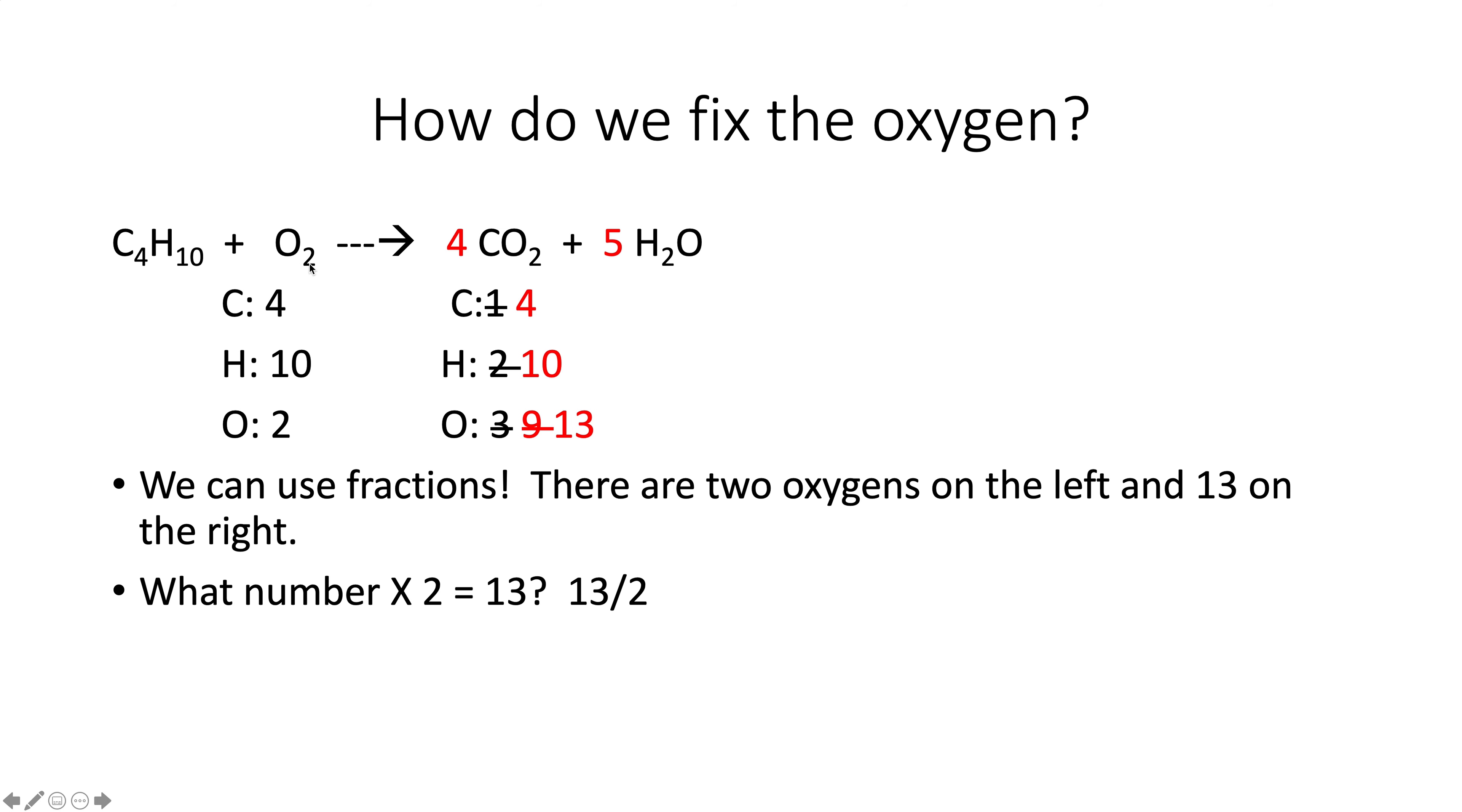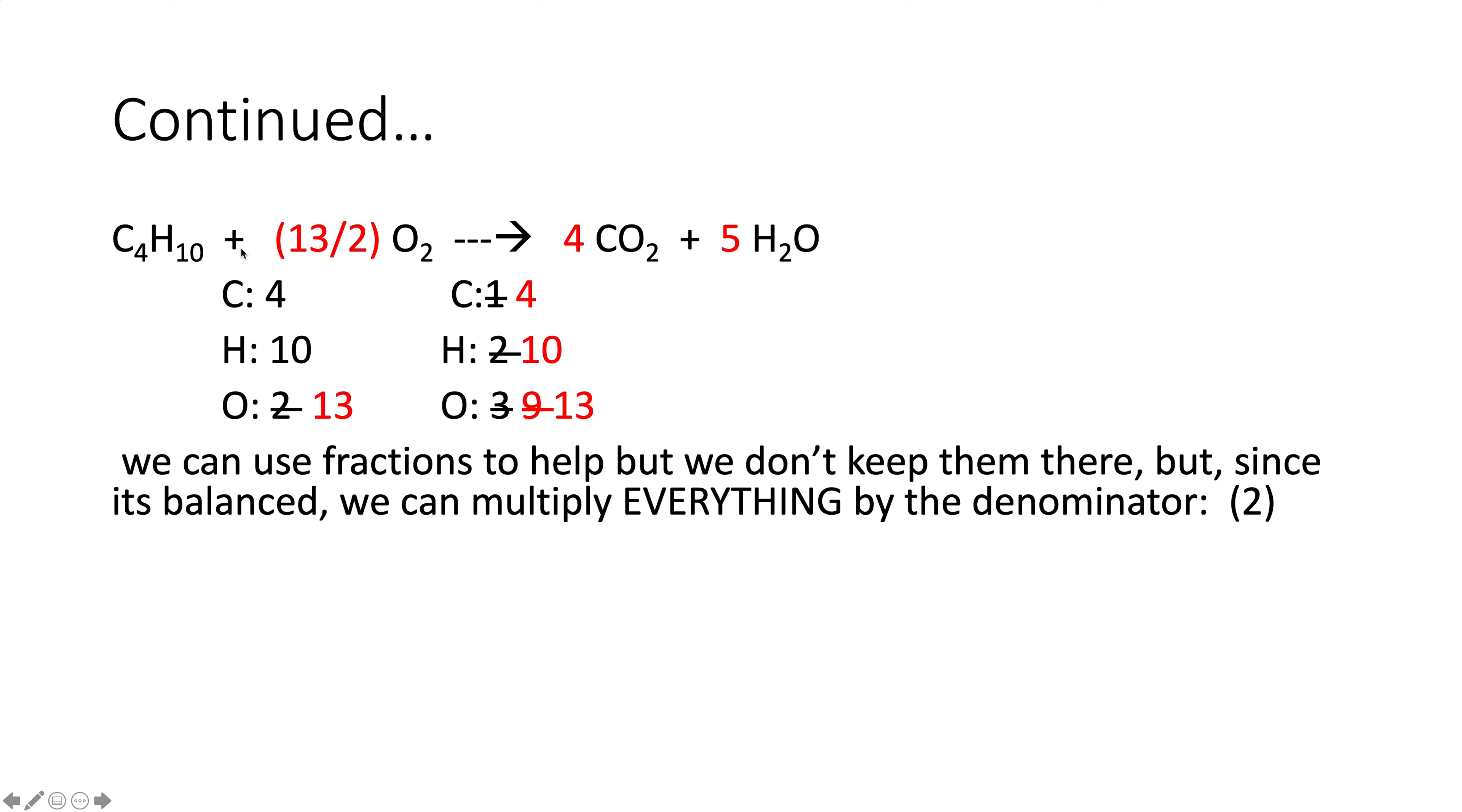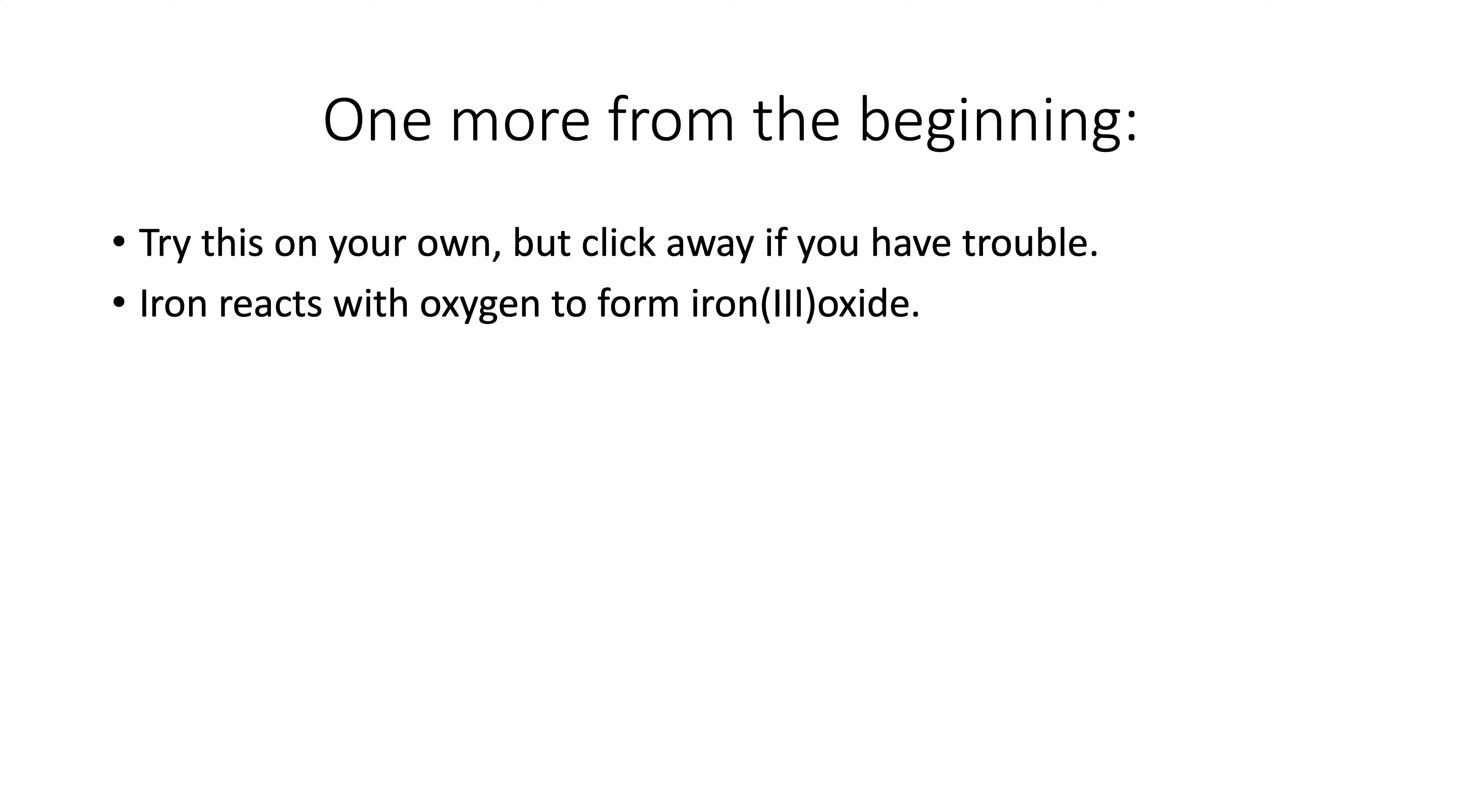Here's the trick. You can use fractions. So if we multiply thirteen halves times two, that gives us thirteen. So if we do that, now it looks like this. Problem is we don't like fractions because in a balanced chemical equation, this could be read one molecule of C4H10 reacts with thirteen halves of a molecule. There's no such thing, but it is balanced. So this is where you can use math. If we just multiply everything by this denominator, it'll stay balanced because we multiply everything by that. So I put a two and I put the whole thing in parentheses. And so now when I distribute the two through, you can verify for yourself that it's still balanced.